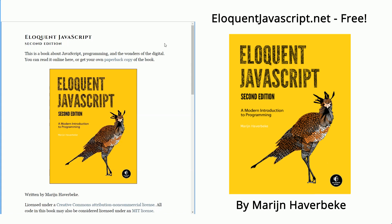The book is called Eloquent JavaScript. Obviously, it's going to be about JavaScript. This is the second edition, written by Maren Haverbeck. It is a fantastic online book, completely free. Eloquentjavascript.net is how you get to it.